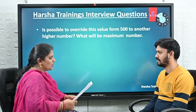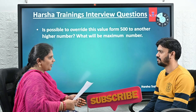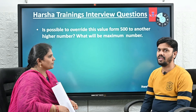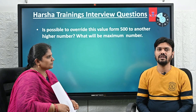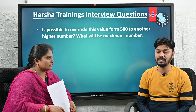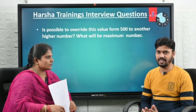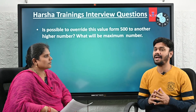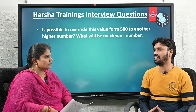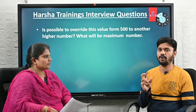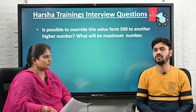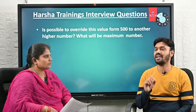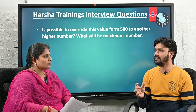Next question: is it possible to override this value from 500 to another number, and what will be the maximum number? Yes, it is possible to override this value to a maximum of 10,000, because the PRPC clipboard can hold a maximum of 10,000 pages in a page list. In the Report Viewer tab under 'maximum number of records to retrieve,' we can enter a value up to 10,000.